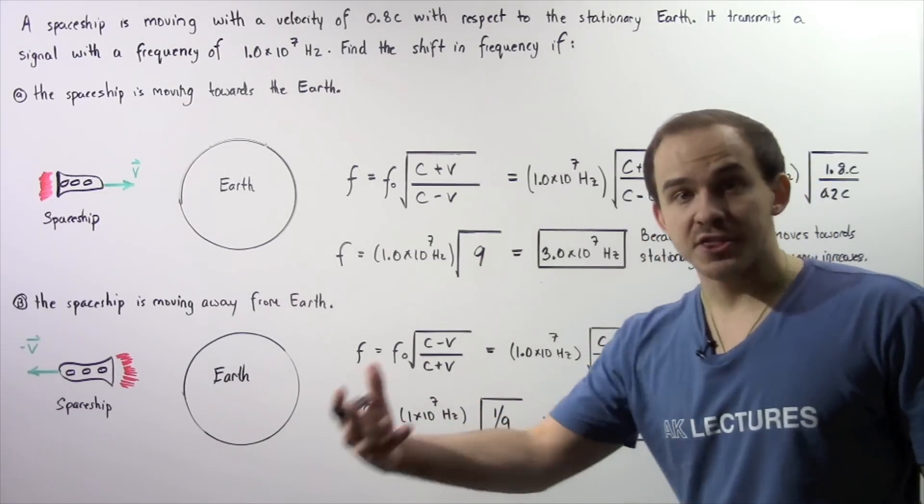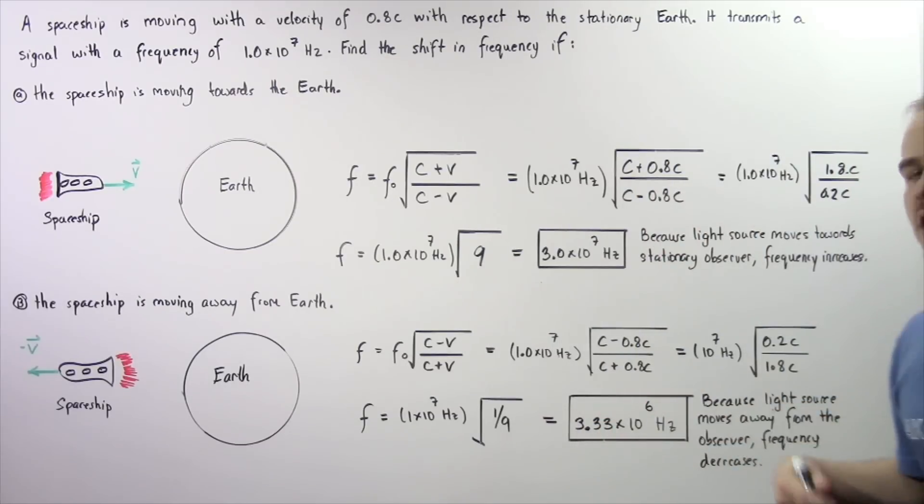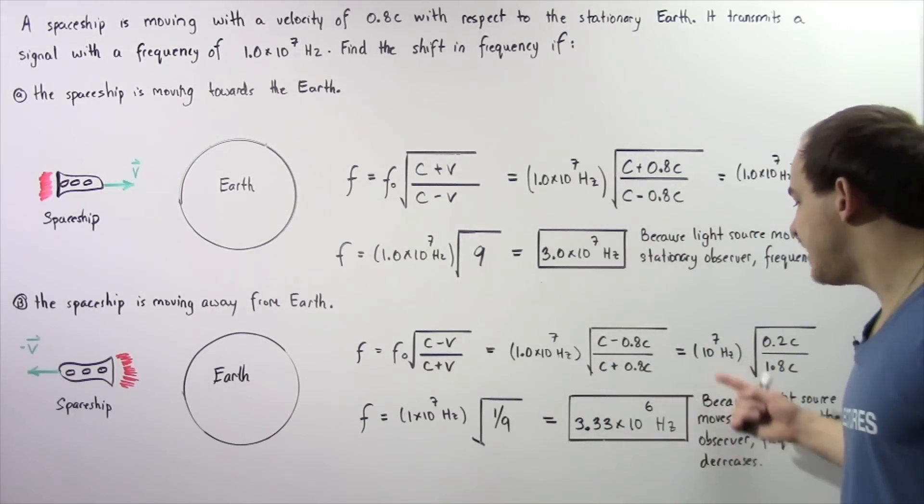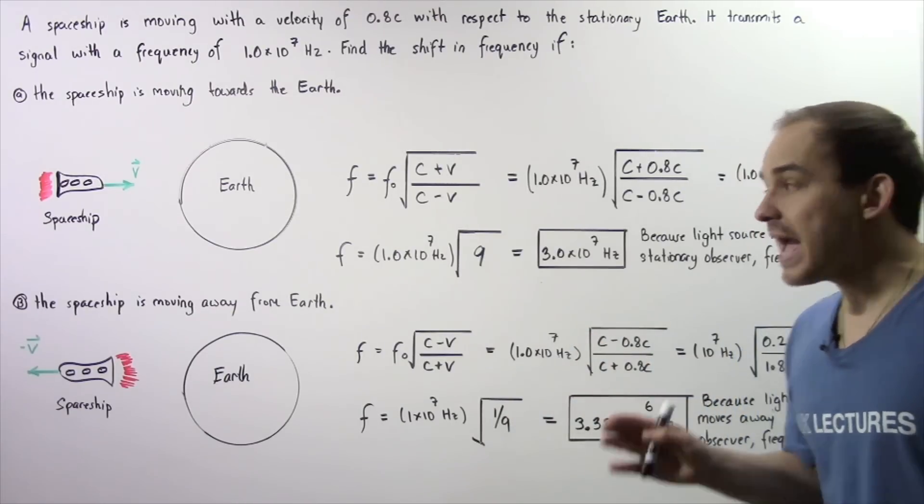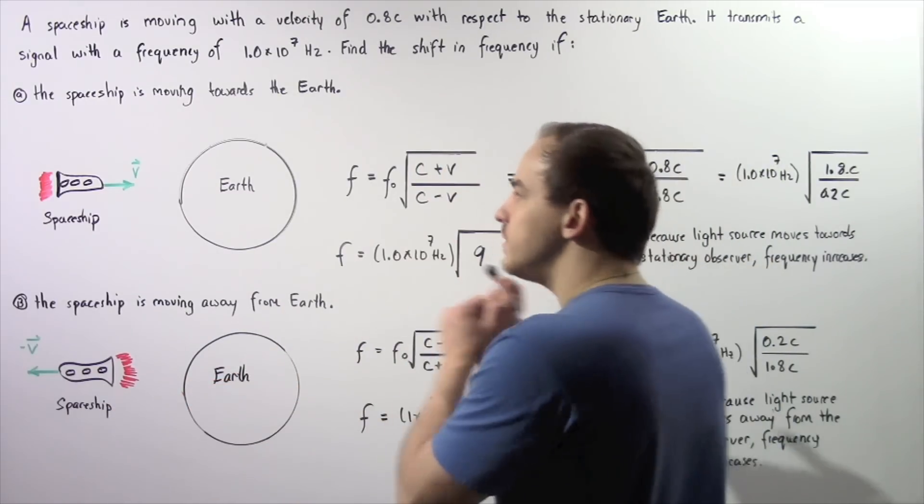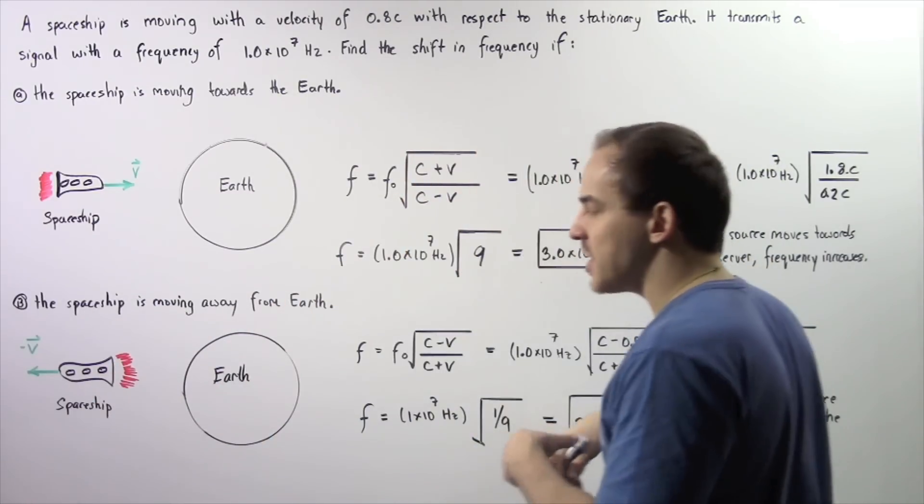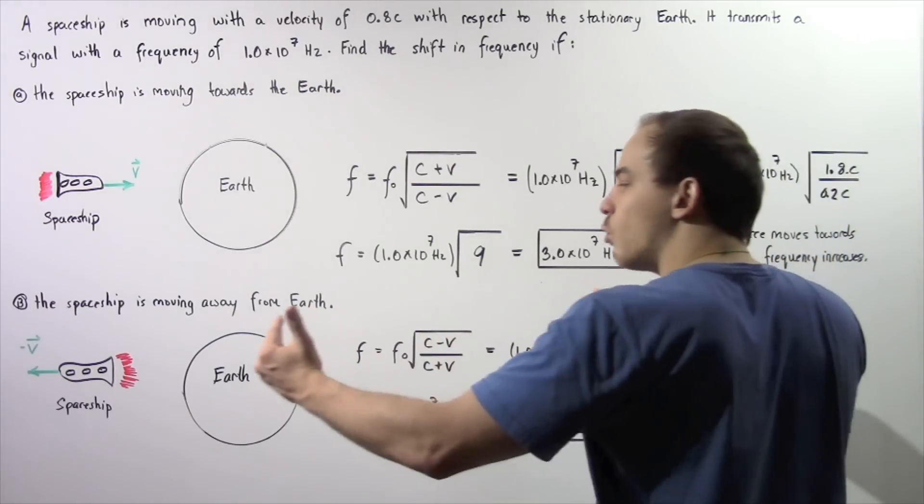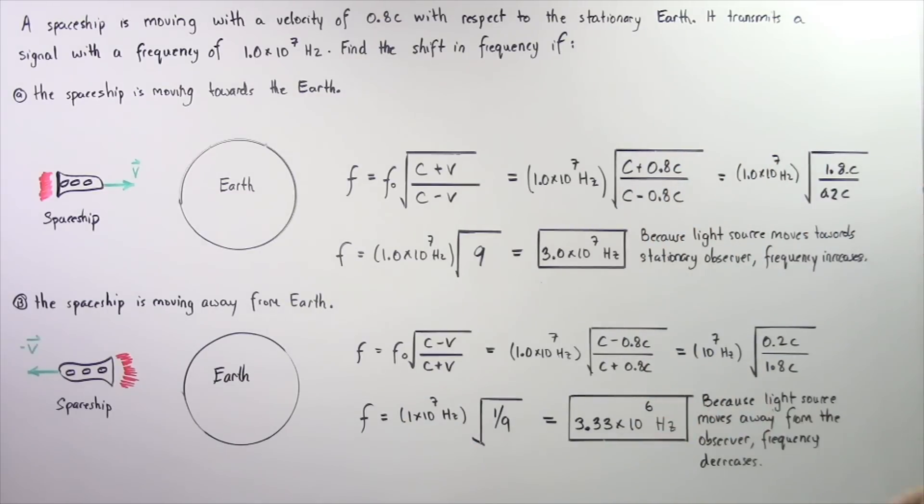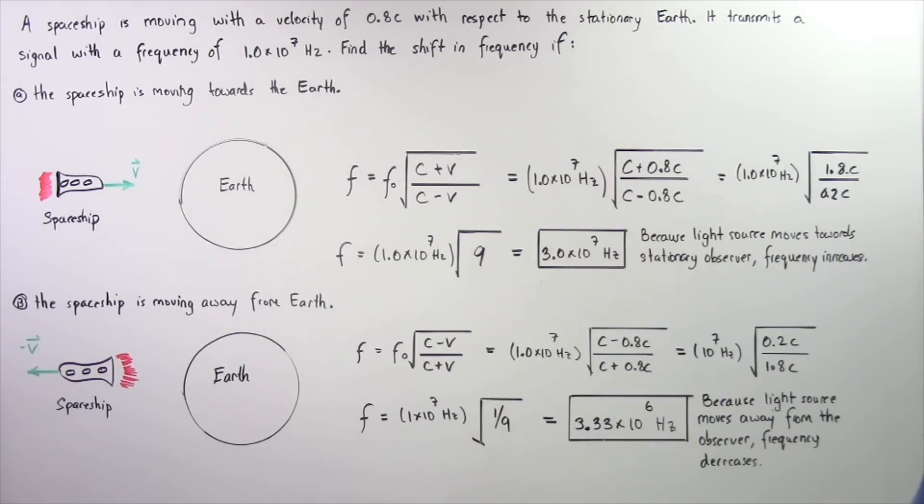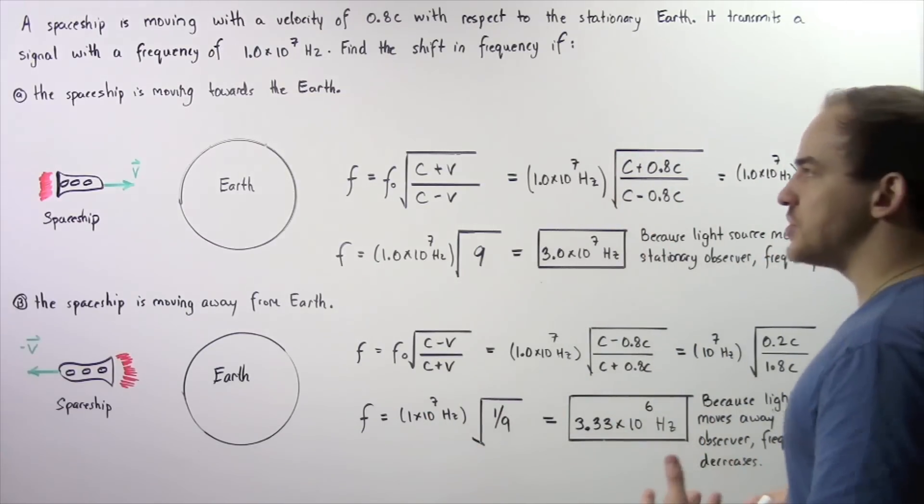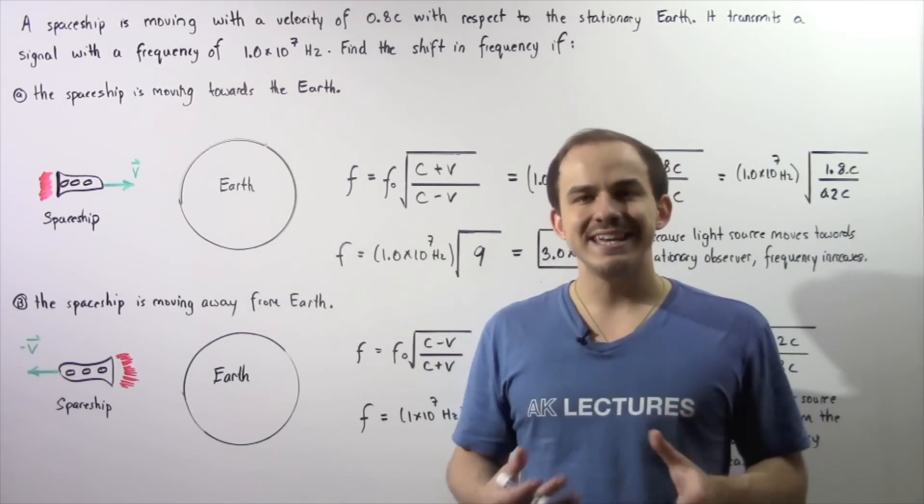This divided by 3 gives us 3.33×10^6 Hz. The new frequency is equal to this quantity and notice it is smaller. That's because the light source is moving away from the stationary observer, which will increase the wavelength and decrease the frequency. Because the light source moves away from the stationary observer, the frequency of electromagnetic radiation will decrease.